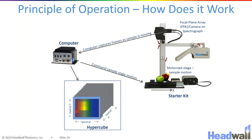The stage can scan past the imaging spectrometer. As the scene moves past the slit, just like in the drone case, every time the sample stage moves one spatial pixel, a new frame is collected and will build up an entire data cube.